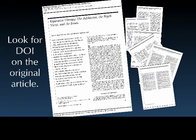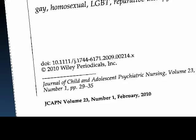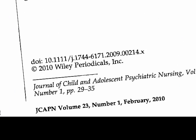The DOI can be found on the original article, especially if the article is in PDF format. It may exist near the top or at the bottom of the article's first page. If the DOI is readily available, insert it at the end of your APA citation. See the sample.